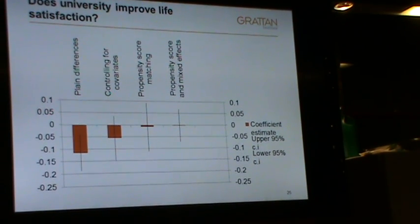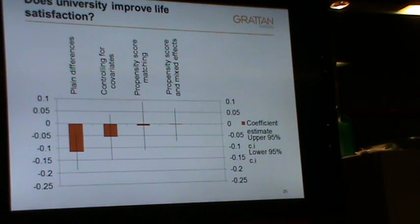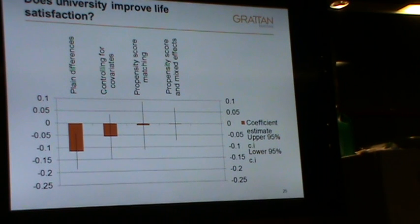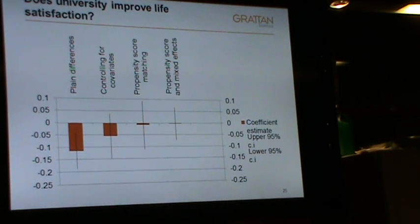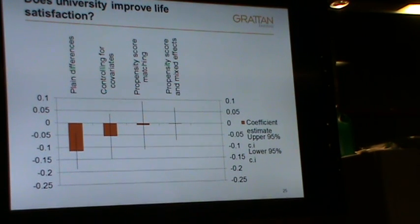A question: for a sample like HILDA, is it actually possible to match one-by-one? Yes — there are 20,000 people, and I'm doing it on 12 or 13 independent variables. An interesting question was raised: does it make a difference if you do it the other way around — find non-university people and match them with university graduates? I haven't tried that; that sounds like a fascinating project worth exploring.